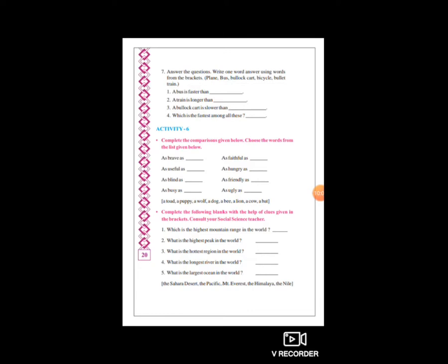As blind as a bat - bat એટલે ચામાચિડિયું. જેના માટે આ comparison કરવામાં આવી - તે blind જ રહે. As friendly as a puppy - puppy સૌથી friendly હોય, આપણે તેને જોઈને જ મઝા પડી જાય. As busy as a bee - bee એટલે મધ-માખી. તે હંમેશા busy, hive કામ કરતી હોય.